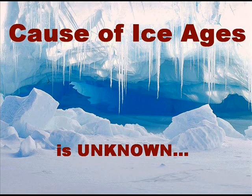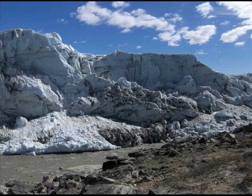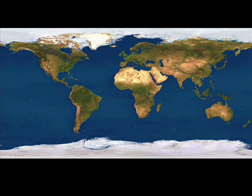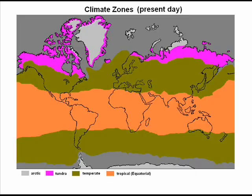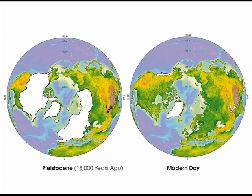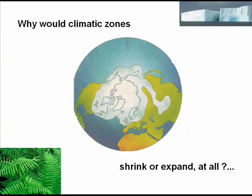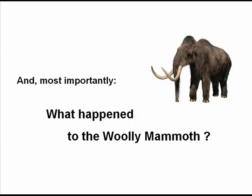The cause of the Ice Ages is unknown. Comparing how the North and South Poles look today versus during the Ice Age raises questions about uneven sunlight distribution and fixed climate zones — why would climatic zones shrink or expand at all?